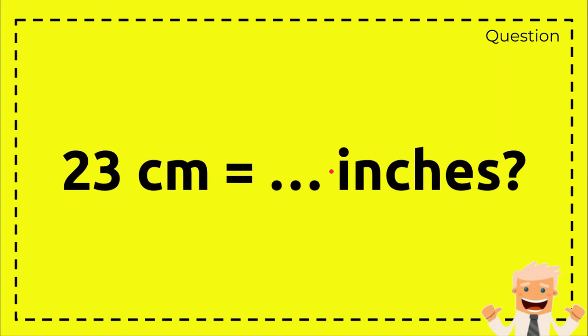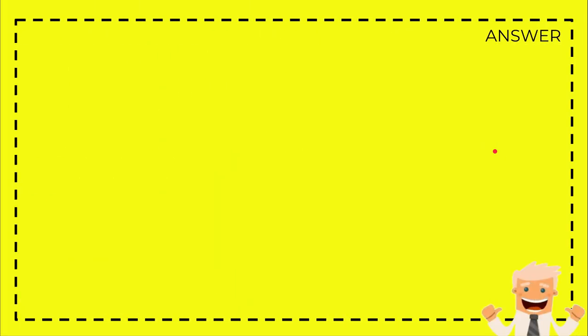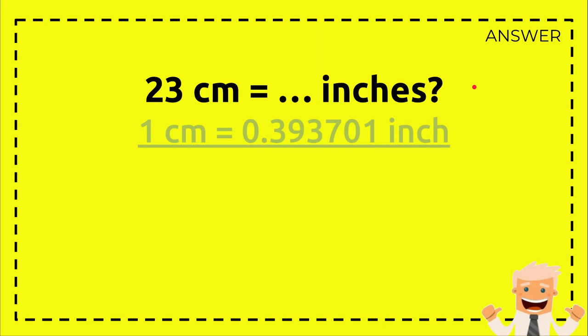This is the answer section. First, you need to write the question again: 23 centimeters equals how many inches? And then you write the equation again. The reason why I'm doing it just like this is to make it simple so you can see directly—this is the formula.